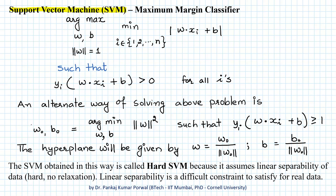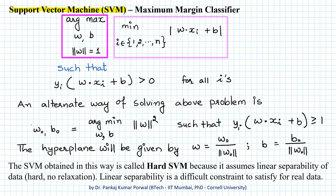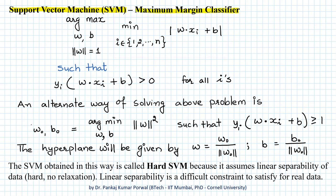Support vector machine is a binary classification algorithm for data that is linearly separable, and it learns the separating hyperplane by maximizing the margin — that is why it is also called a maximum margin classifier. The SVM algorithm ensures linear separability of data by imposing the constraint: yi times (w dot xi plus b) greater than zero, for all the data points in our dataset.